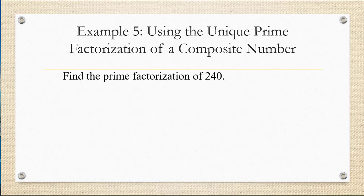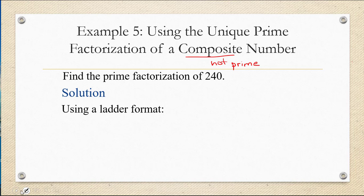Let's practice finding the unique prime factorization of a given composite number. A composite number just means that it's not prime. So let's find the prime factorization of 240. We're going to do this in two different ways, first using the ladder method. All this means is that we're going to divide 240 by prime numbers and see which goes in evenly, in a way that's organized and quickest.